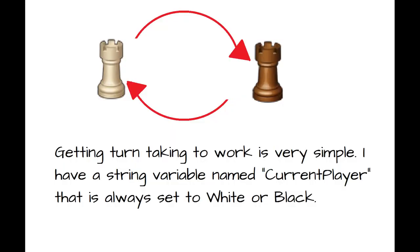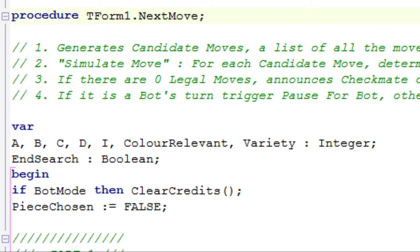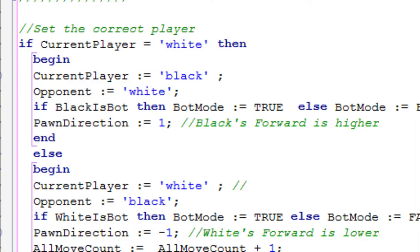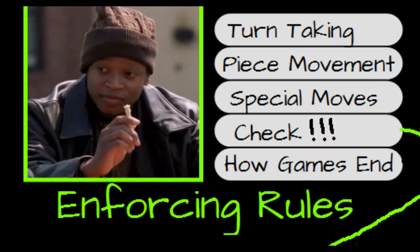Getting turn-taking to work is very simple. I have a string variable called current player that is always set to white or black. Within the procedure next move, that I call whenever it's time for someone to make a move, are the lines that mean, hey, current player variable who can only remember one move at a time. If you were just now remembering the word white, remember the word black instead. But if you weren't just now remembering the word white, start doing that now. That guarantees that current player will switch back and forth between white and black and back again. You'll see I also have a string variable called opponent to hold the opposite. That wasn't strictly necessary, but made for more readable code.